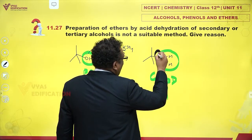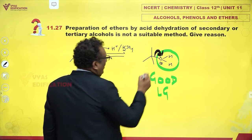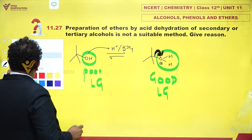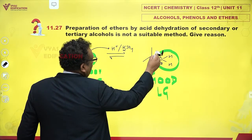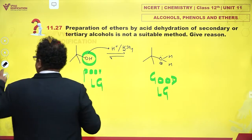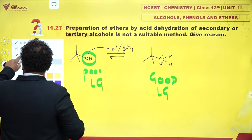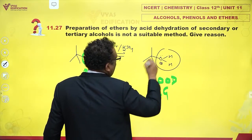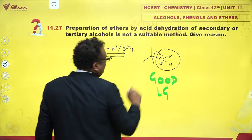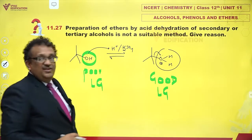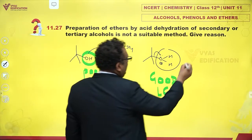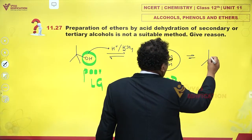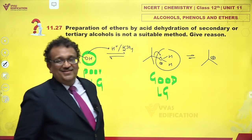It just leaves. If it's a good leaving group, it will just leave. This group leaves, and as they leave, they generate a lovely carbocation like this.